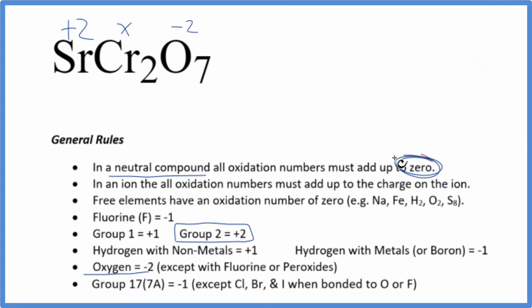So we know all of this is gonna add up to zero, so we can just make an equation. Two plus two times x, two x minus, this is seven times minus two, so that's minus 14, that equals zero.